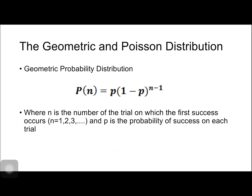Next is the geometric and Poisson distribution. For the geometric probability distribution, P(n) is equal to p times 1 minus p raised to n minus 1. The difference between geometric and binomial is that in geometric, we are after at what trial will be our first success. Here p is the probability of success, and q is the probability of failure.